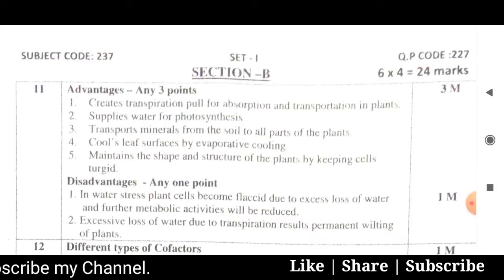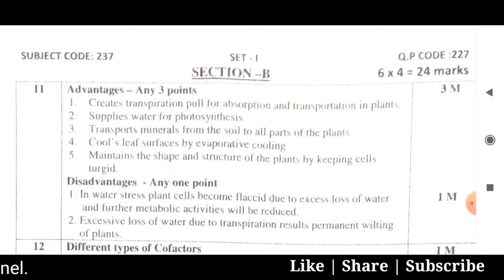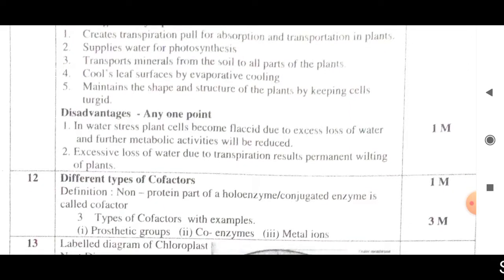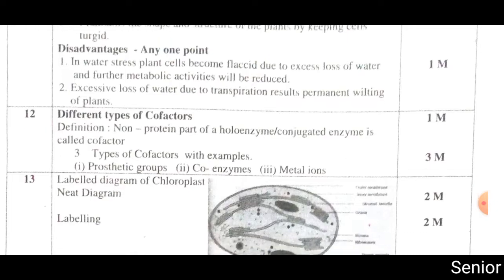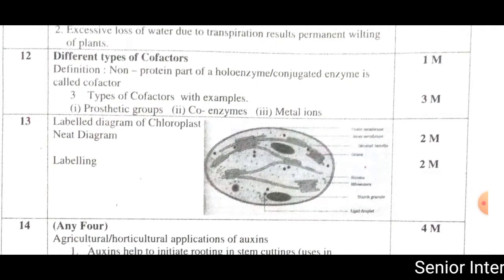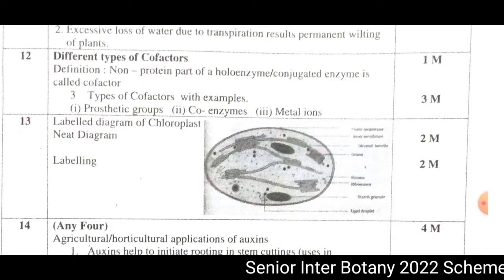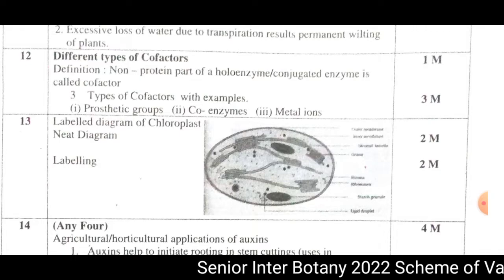For the question on cofactors: the definition is worth 1 mark, and listing three types of cofactors is worth 1 mark each, giving 3 marks. The definition plus the three cofactors equals a total of 4 marks.